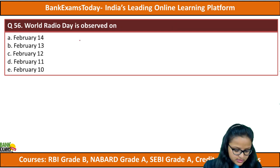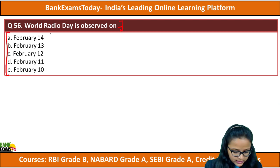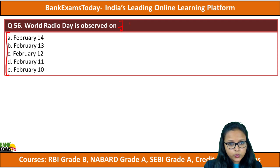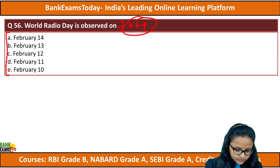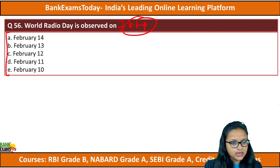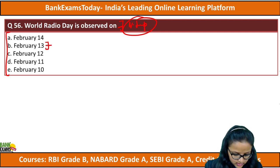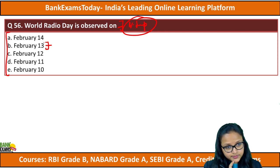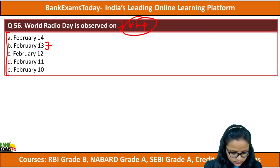Moving to question number 56: World Radio Day is observed on which date? The options are February 14, 13, 12, 11, or 10. This is a very easy and very important question. The correct answer is February 13th.